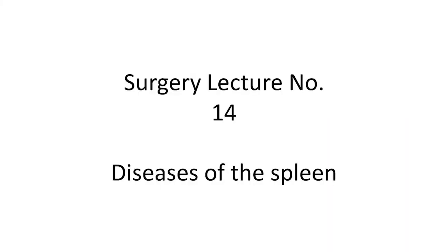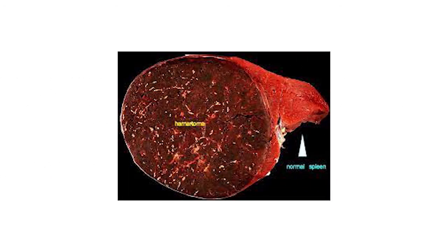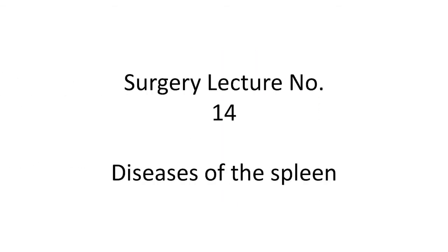Today we are learning surgery lecture number 14: diseases of the spleen. In this lecture, we will learn the anatomy and physiology of the spleen, congenital abnormalities, splenic cysts, hematomas, rupture of spleen, and anemias for which splenectomy is required — including hereditary spherocytosis, acquired autoimmune hemolytic anemia (AIHA), idiopathic thrombocytopenic purpura (ITP), thalassemia (Cooley's/Mediterranean anemia), and sickle cell anemia.